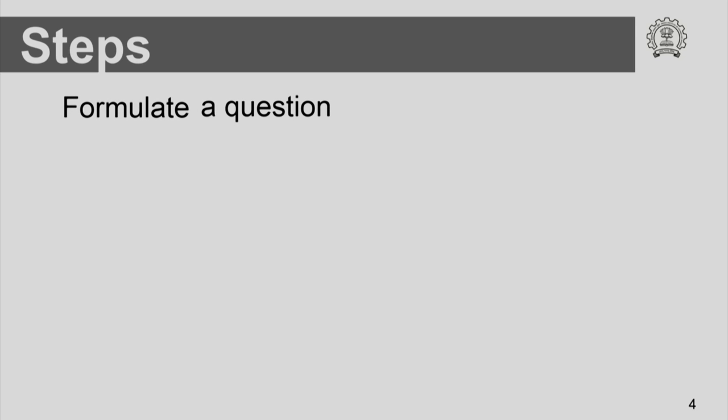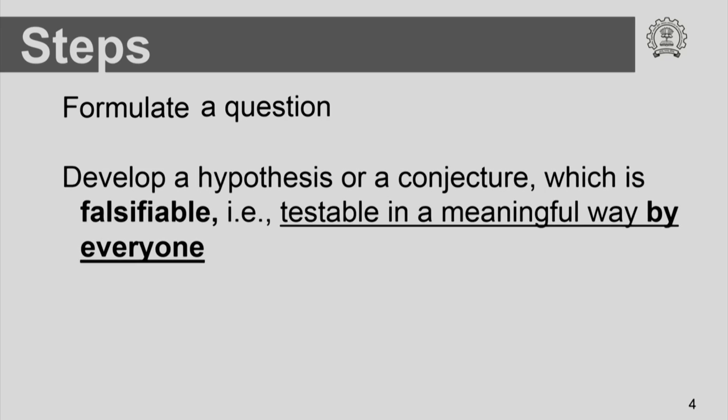What are the steps involved? The first and primary thing that you do is to formulate a question. This is an art which you pick up when you start working in science, particularly when doing research or investigating an open question. You have to formulate the right question. The next step is to develop a hypothesis or a conjecture — some statement or explanation about the phenomena you are investigating. The most important thing about this conjecture or hypothesis is that it should be falsifiable.